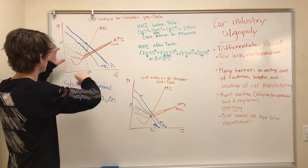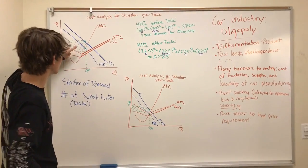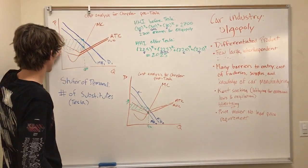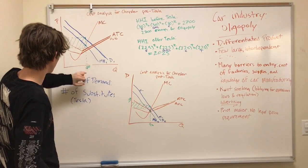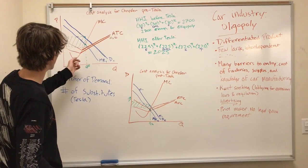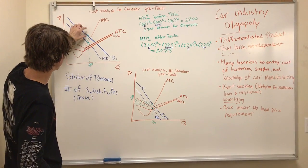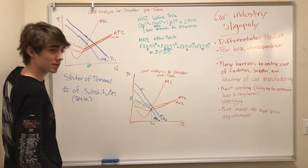Q star is here, which is when marginal cost equals marginal revenue, and then that is the demand for the price. After Tesla comes in, there's a shift in demand because the number of substitutes increases.